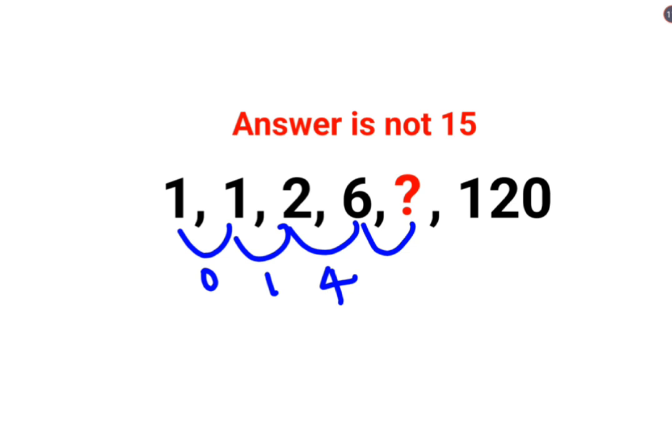So technically the next difference should have been 9 because these are 0 square, 1 square, 2 square, the next should be 3 square, right?